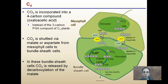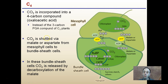Carbon dioxide is incorporated into a four-carbon compound, oxaloacetate, in order to ultimately make our sugars. Carbon dioxide is shuttled via malate or aspartate from the mesophyll cells to the bundle sheath cells. In these bundle sheath cells, carbon dioxide is released by decarboxylation of malate. Instead of the three-carbon PGA compound in C3 plants, this four-carbon acid intermediate feeds carbon from the CO2 into the Calvin cycle. The Calvin cycle itself doesn't change — it's just the preparation these plants go through to deliver that carbon that has this intermediate step.